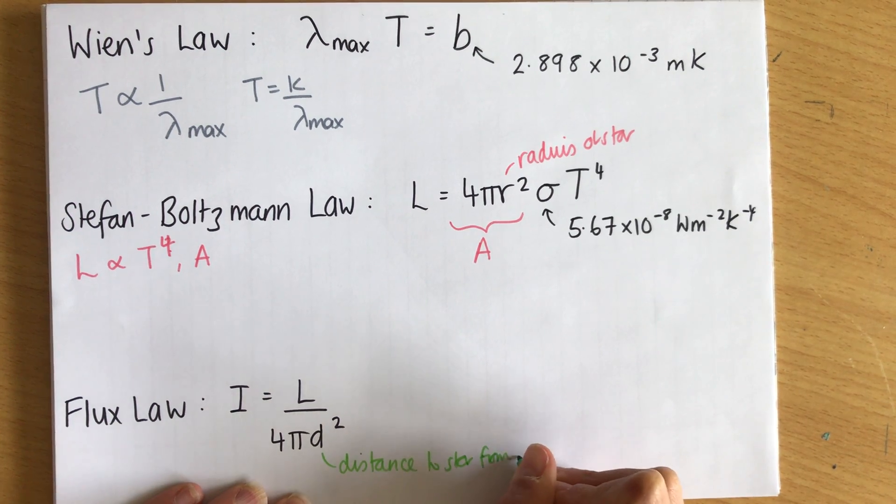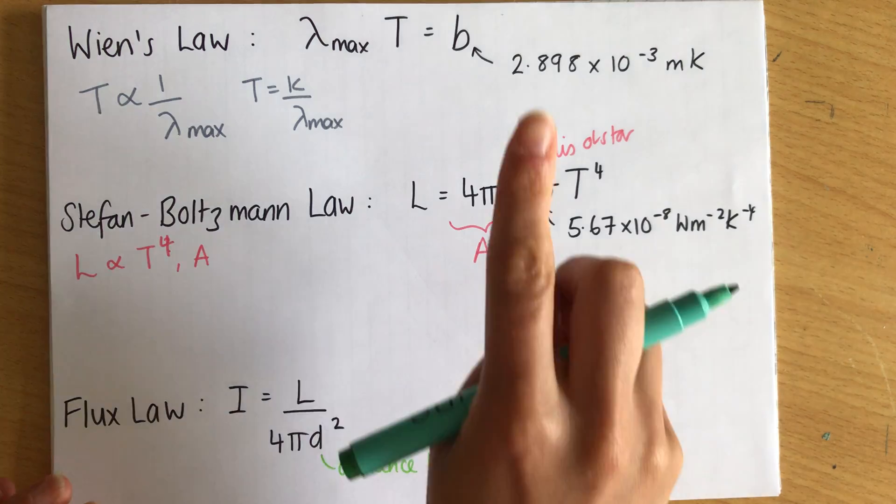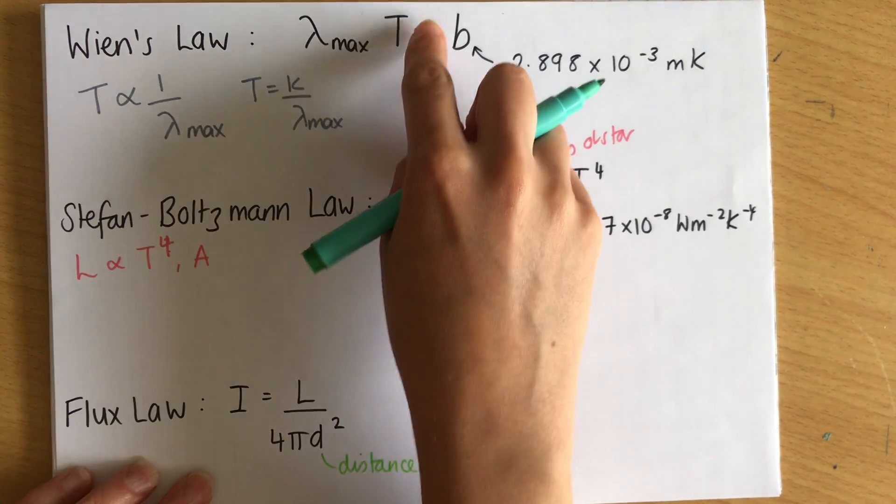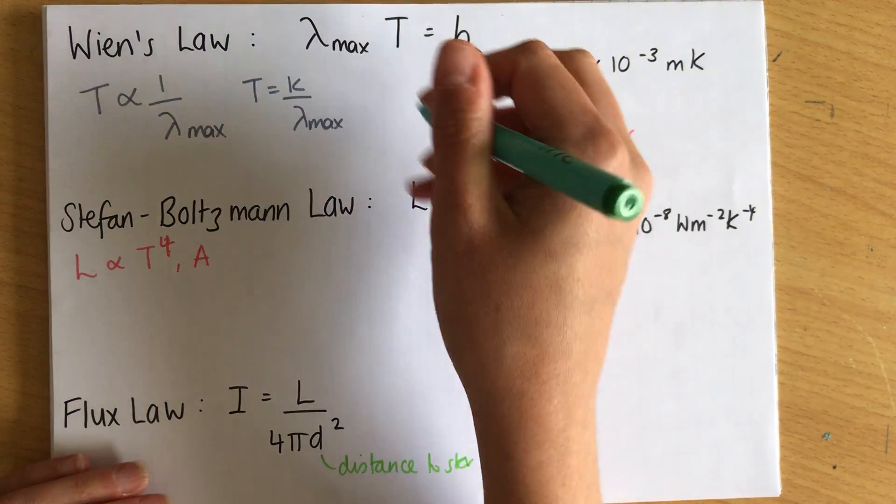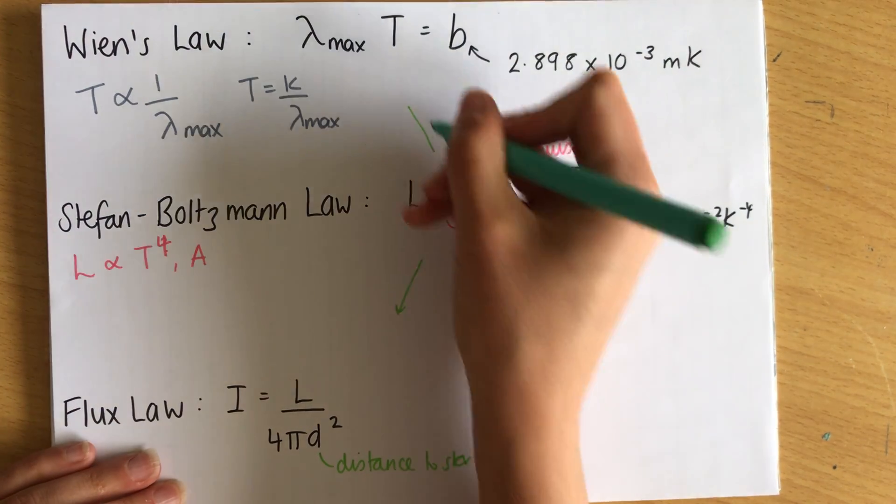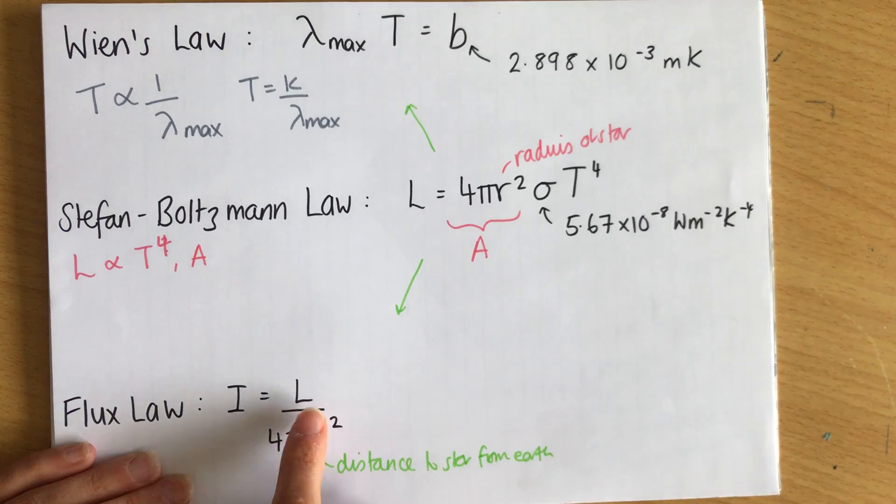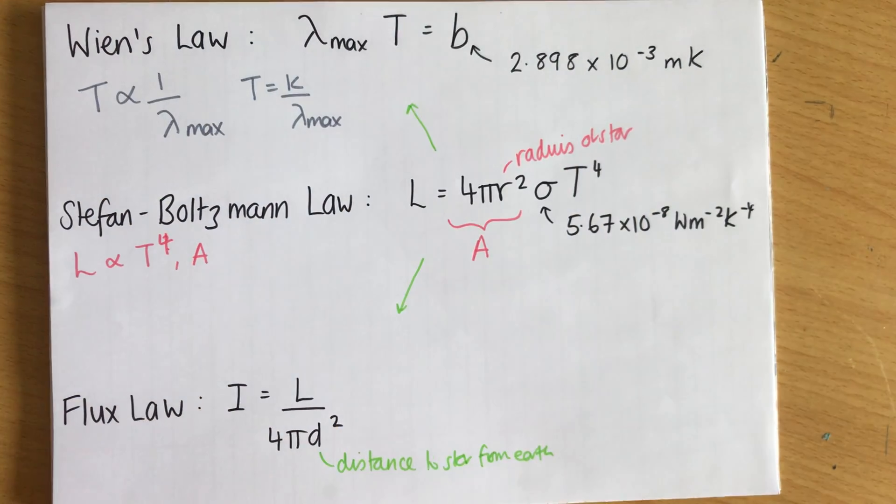But this equation is useful because it links these three things together. So the flux law and Wien's law don't really link. There's nothing that's the same within them. But the Stefan-Boltzmann law kind of matches these two together because it's got the temperature from Wien's law and it's got the luminosity from the flux law. So it's the key to being able to use Wien's law and flux law together.